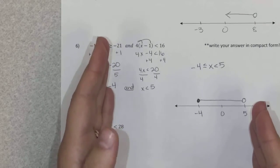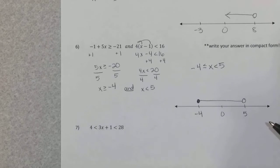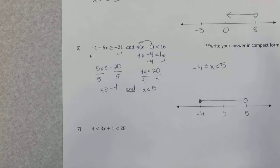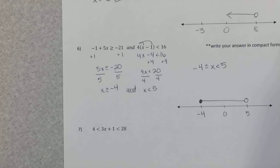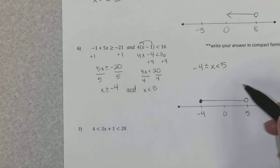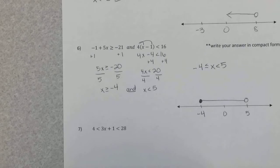So compact form always matches the graph in the sense that your smallest number is on the left and your symbols are always a less than or less than or equal to. That's the standard way of writing that in compact form. You can only write your answers in compact form when you have an and inequality.